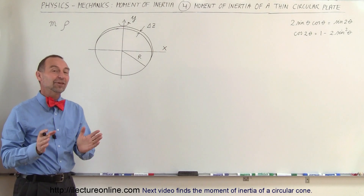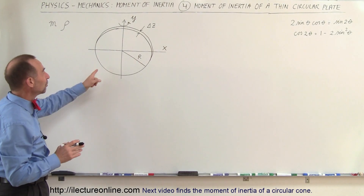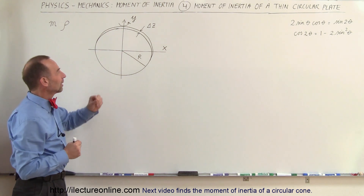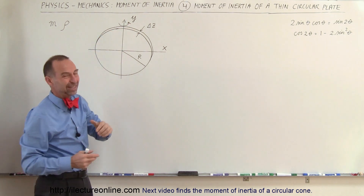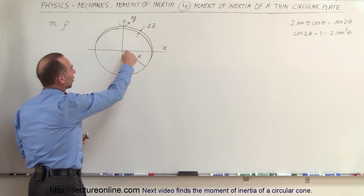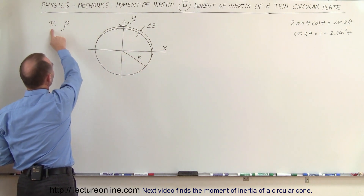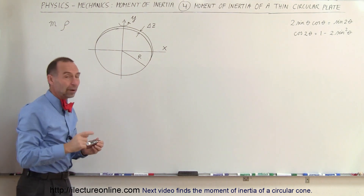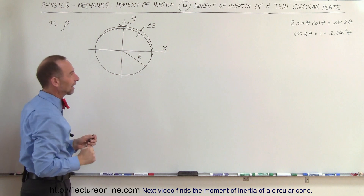Welcome to ElectronLine. In this video we're going to show you how to find the moment of inertia of a flat circular disc. The disc has a slight amount of thickness — let's call it delta z — and delta z is just a constant. The radius of the disc is r, the mass of the disc is m, and the density is called rho. We're going to take the disc and rotate it about the y-axis.